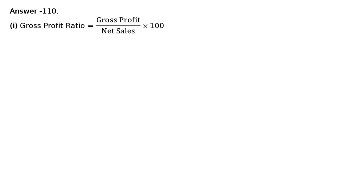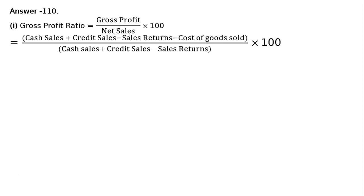This is question 110 part 1. Revenue from operations is given — cash sales and credit sales, return of sales, and cost of revenue from operations. We need to calculate the gross profit ratio. Gross profit ratio equals gross profit upon net sales into 100, that is cash sales plus credit sales minus sales returns minus cost of goods sold, upon net sales into 100. That equals Rs. 2 lakhs upon Rs. 10 lakhs into 100, which is 20%. So gross profit ratio is 20%.